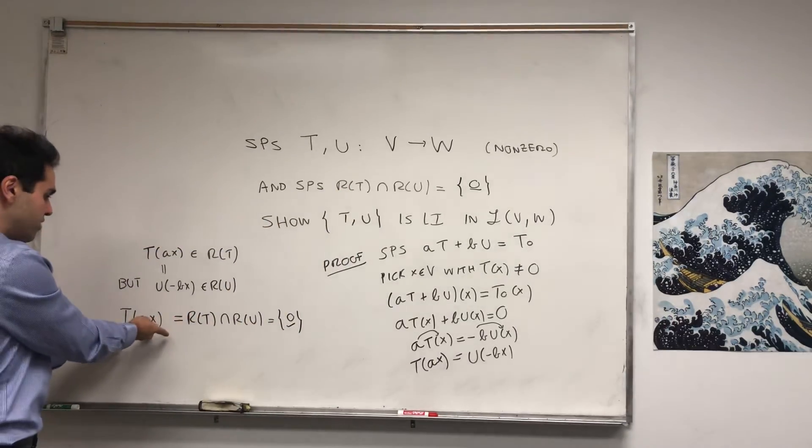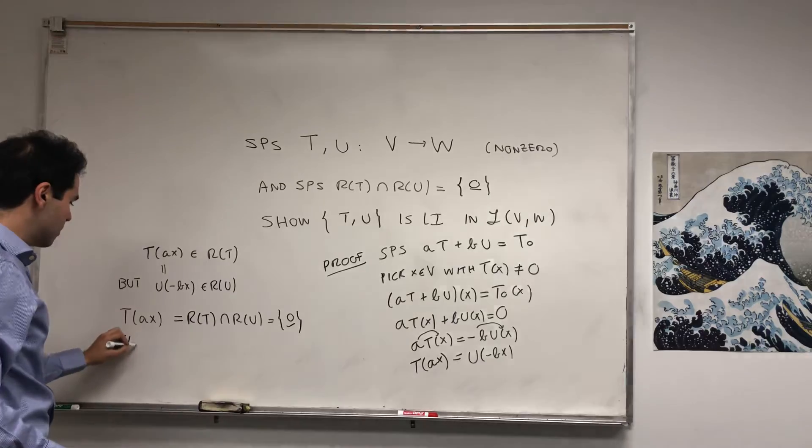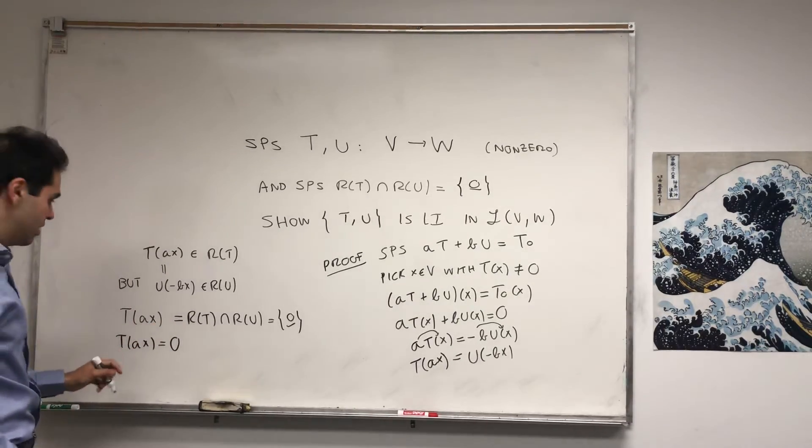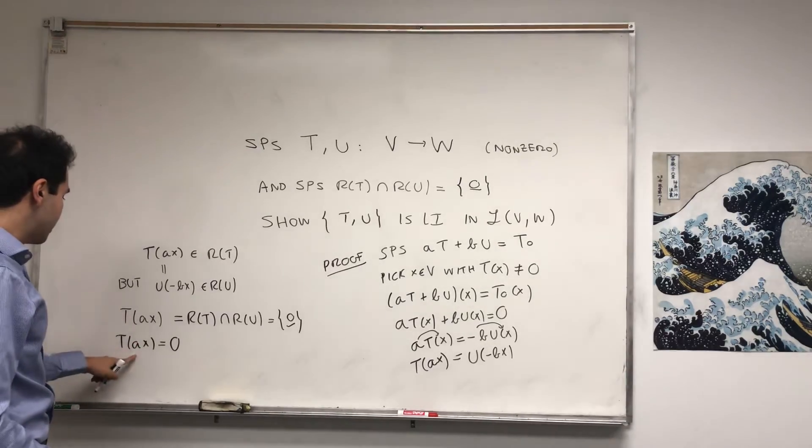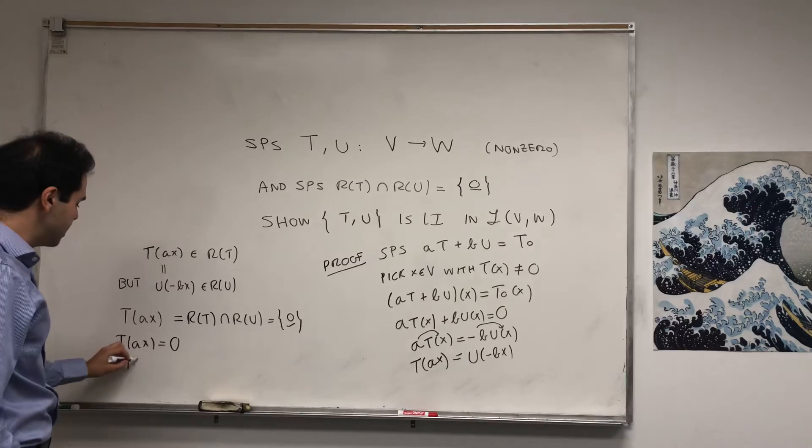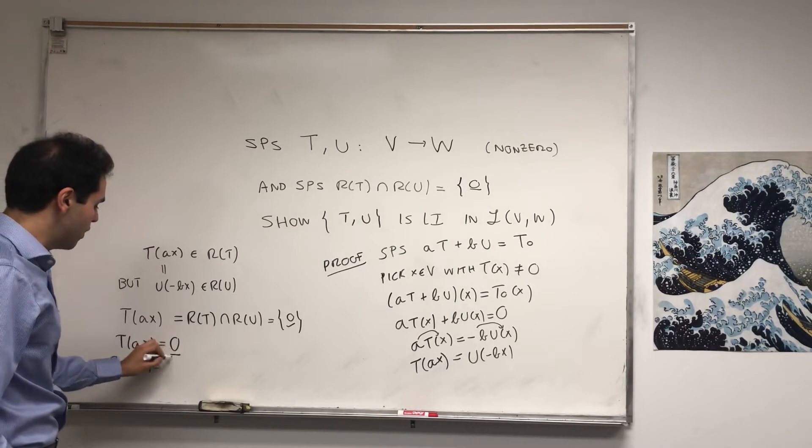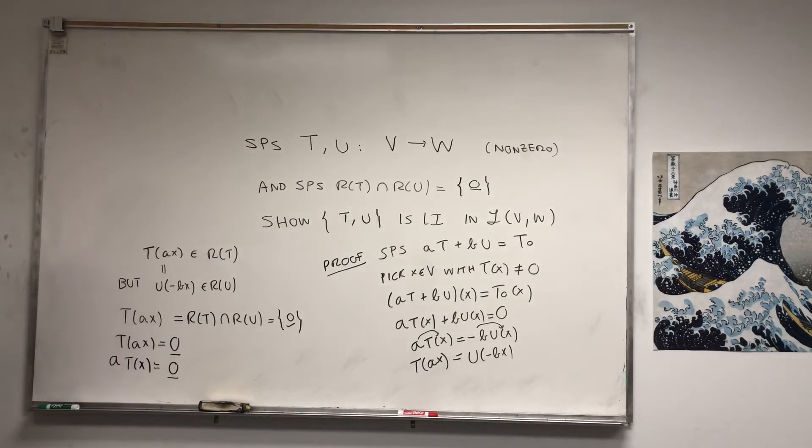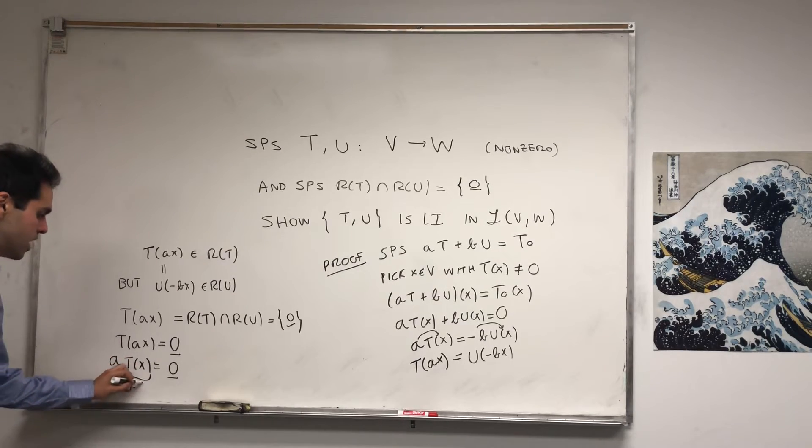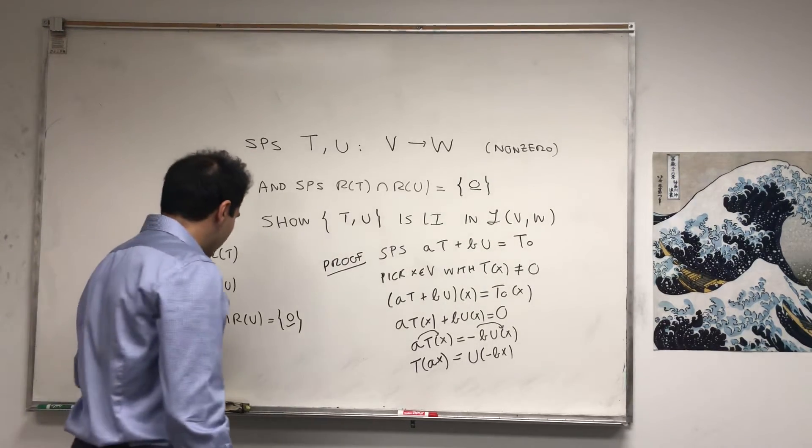So what this tells us is T of AX has to be the zero vector. And what we get then is that if you put A outside, A*T(X) is the zero vector. But that's a problem because you see, we assumed this is nonzero. So how can A*T(X) be zero? Well, the only possibility is that A is zero.